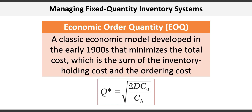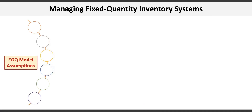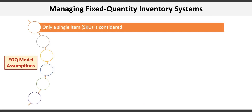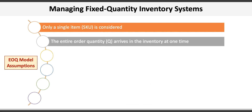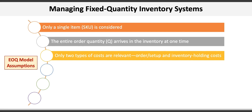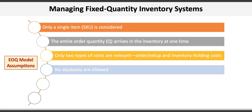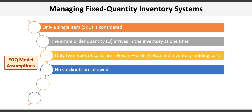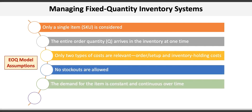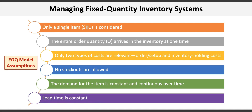There are six key assumptions behind the EOQ model: first, only a single item or SKU is considered; second, the entire order quantity Q arrives all at once; third, only two costs are relevant — order/setup cost and holding cost; fourth, stockouts are not allowed; fifth, demand for the item is constant and continuous over time; and sixth, the lead time is constant.